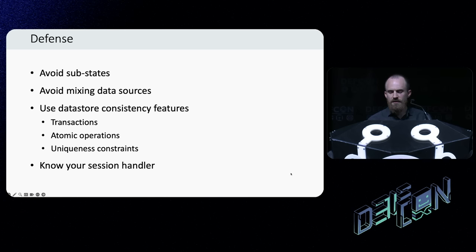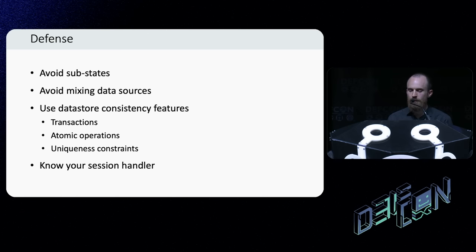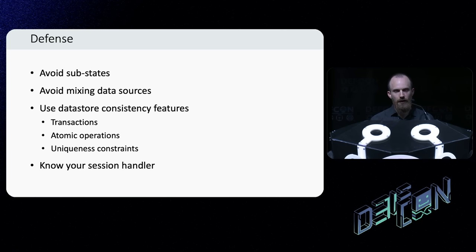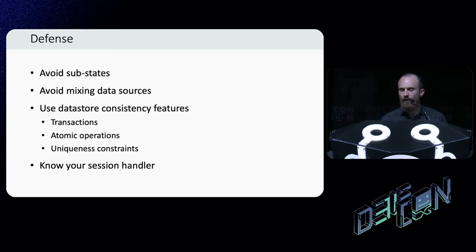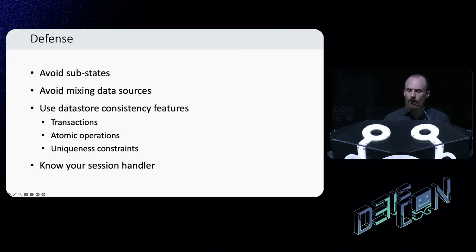For defense: when a single request can push an application through multiple invisible substates, understanding that application and predicting its behavior is incredibly difficult, and defense is just not practical. My advice is try to eliminate substates entirely — the effects of each request should be atomic. You can achieve that generally using your data store consistency features. Another thing that will help is to avoid mixing data sources. Devise was vulnerable because they sent an email to an address from an instance variable but took the contents from the database — if they had taken both the email address and the contents from the database, they would have been absolutely fine. The other key thing is to make sure you know what kind of locking system your session handler is using, because if it's not doing any locking, that's bad news.